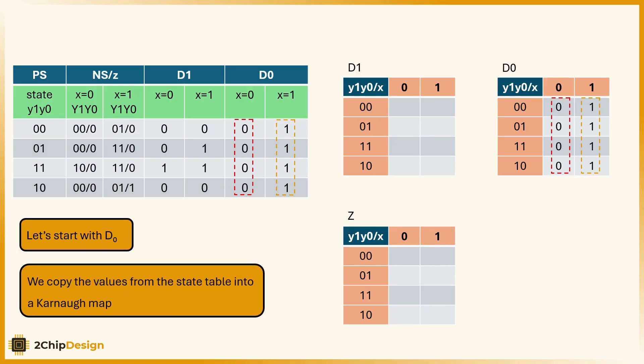Let's start with D0. We copy the values from the state table into the Karnaugh map.